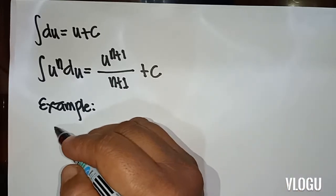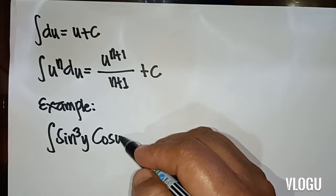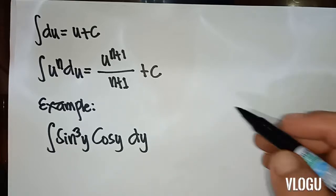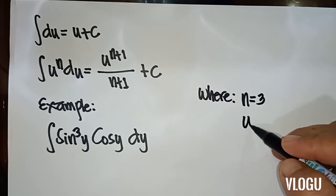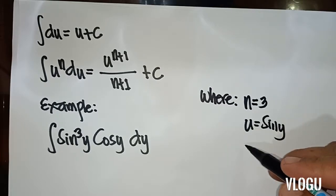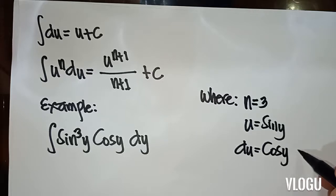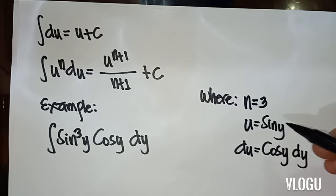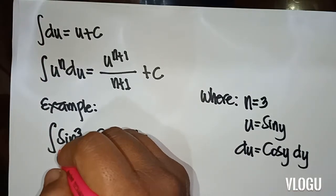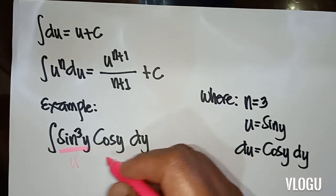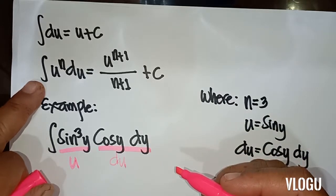First example: the integral of sin³y · cosy dy. Here n equals 3, u equals sin y, and du equals cosy dy — since the derivative of sin y is cosy dy. As you can see in the given, sin y is our u, and cosy dy is our du. That is already a complete form of u to the n du.